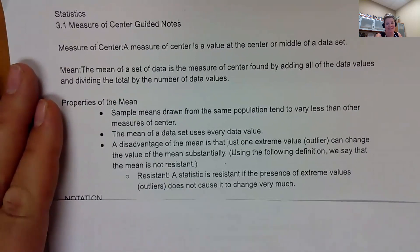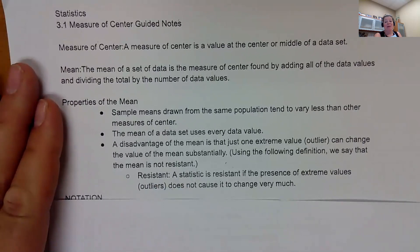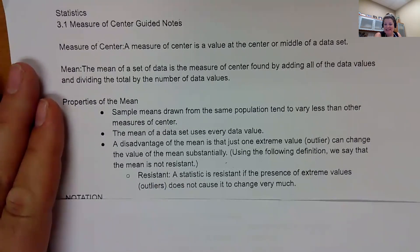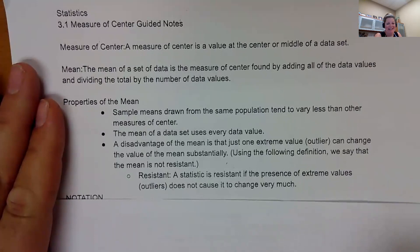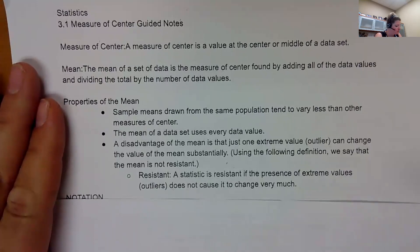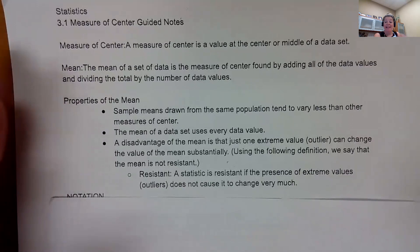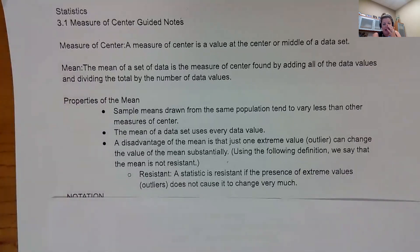Let's define resistant. A statistic is resistant if the presence of an extreme value or outlier does not change its value, or at least not very much. So this one is not resistant. Outliers really change your mean. I love the example of incomes. If we have one person in Wyoming that makes a ton of money, if we include their billions of dollars with everybody else, it's going to make our incomes look really high. That outlier will change our middle or average income.